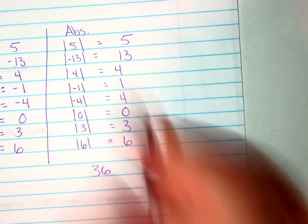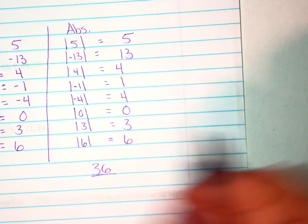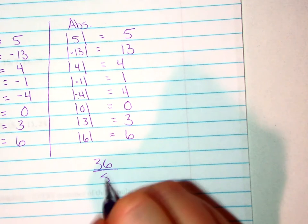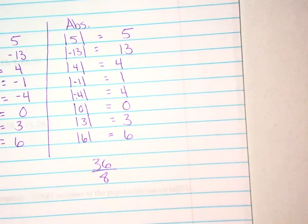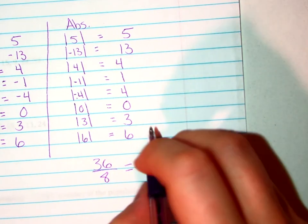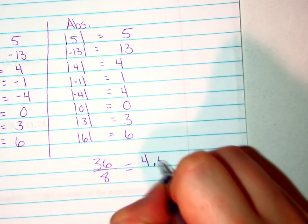In order to find the mean of my absolute value deviation, I will divide by 8 because I added 8 values. And so my MAD, my mean absolute deviation, equals 4.5.